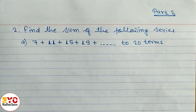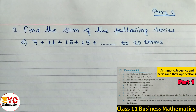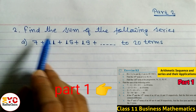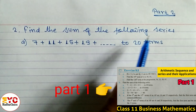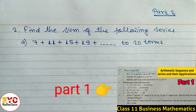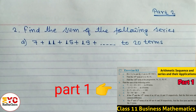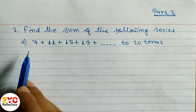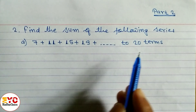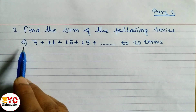In the second part of the video on arithmetic series, we will learn question number 2. Find the sum of the following series using the sum formula. We have two formulas of sum which are already provided, and here we have to find the sum of 20 terms.